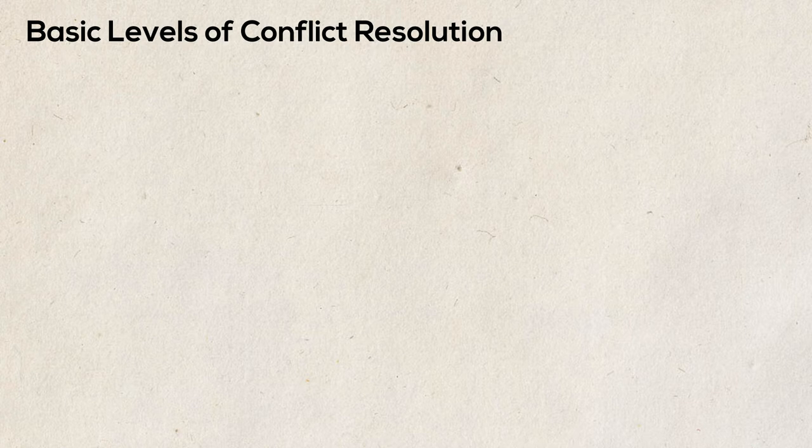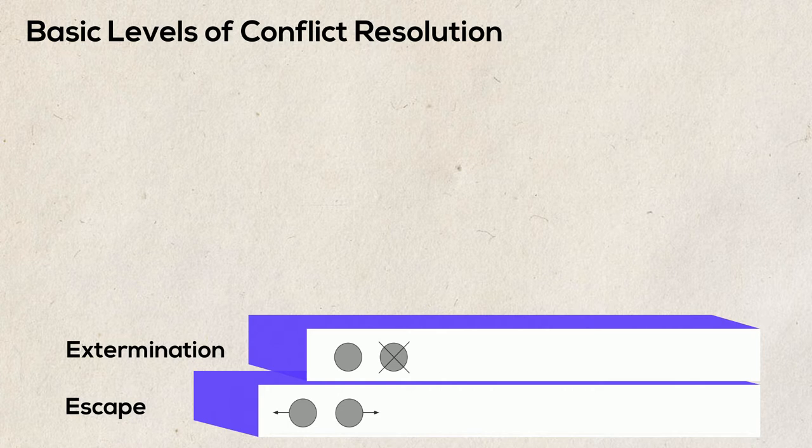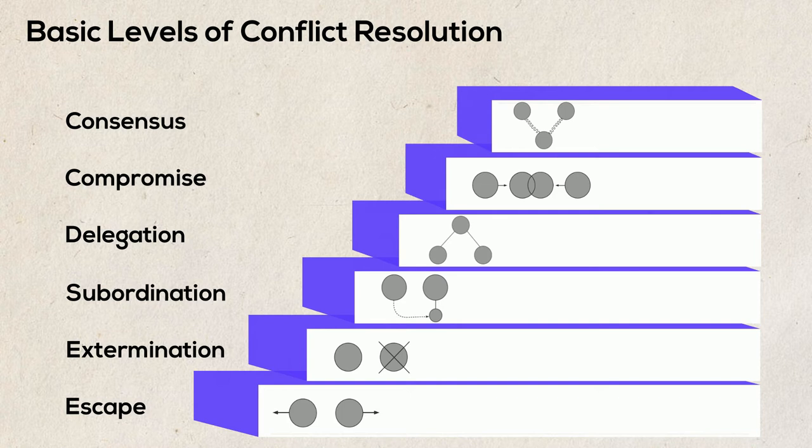These six stages are: escape, extermination, subordination, delegation, compromise, and consensus. Now, subsequently, all these six stages are explained separately. Let's have a look.